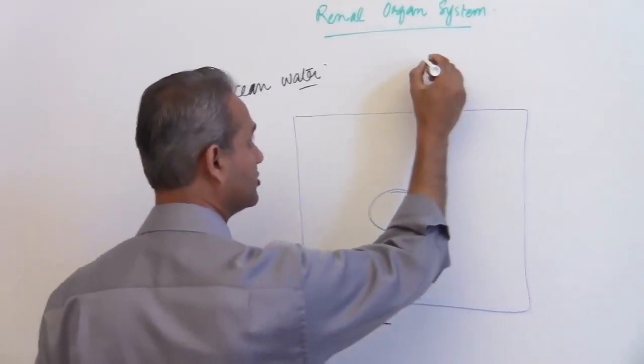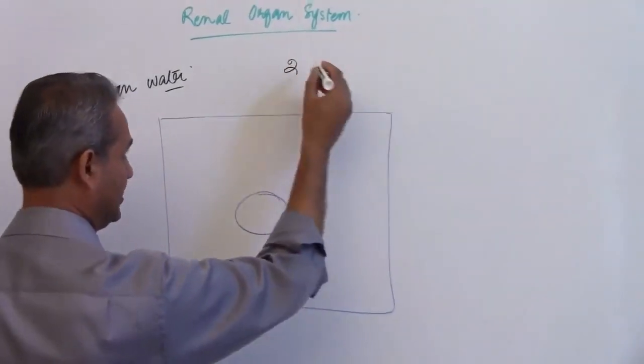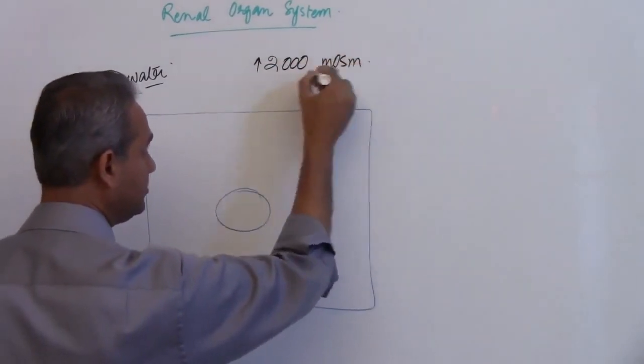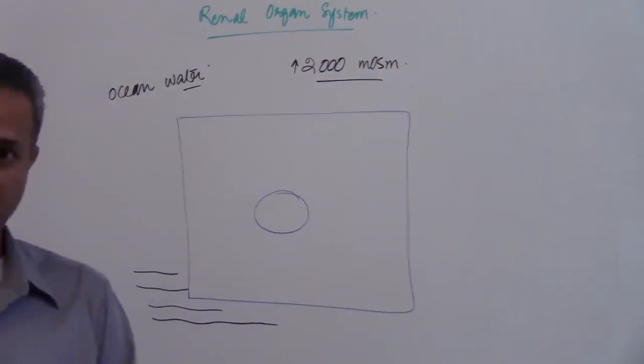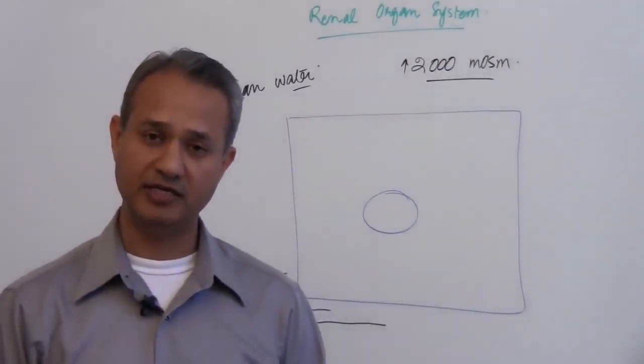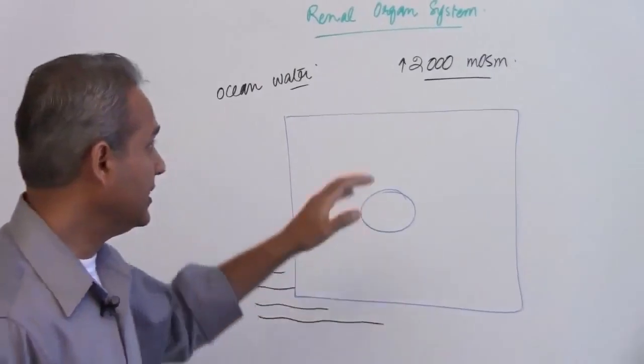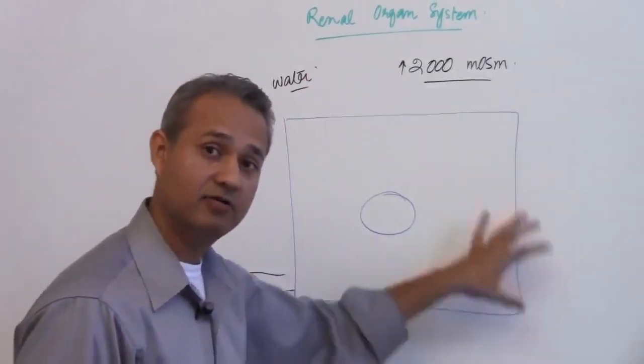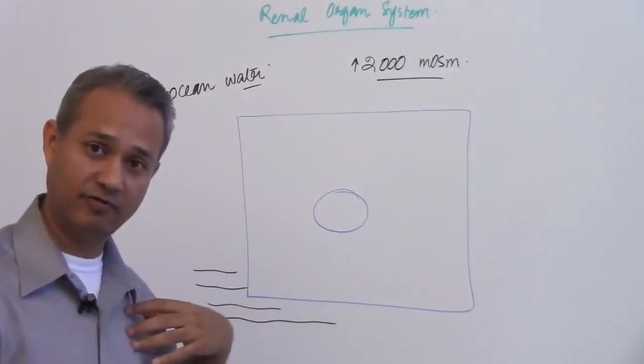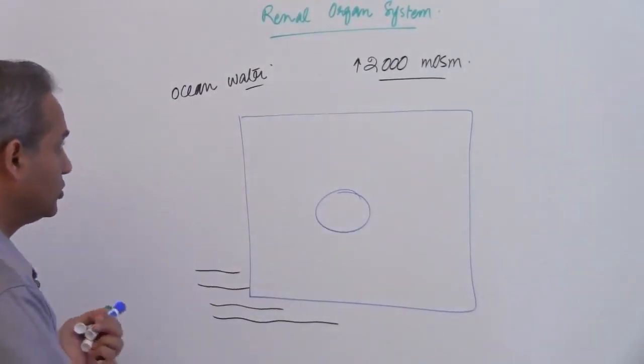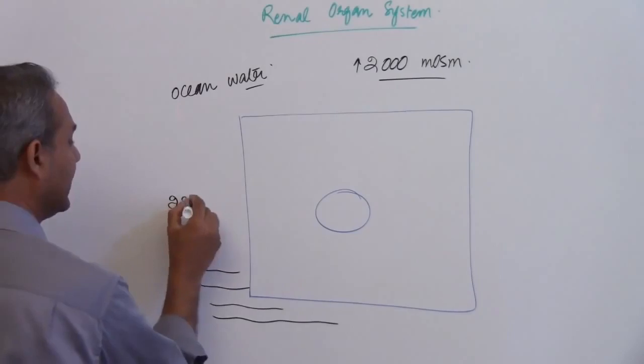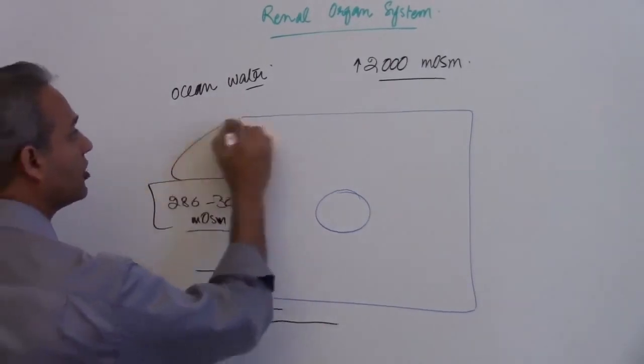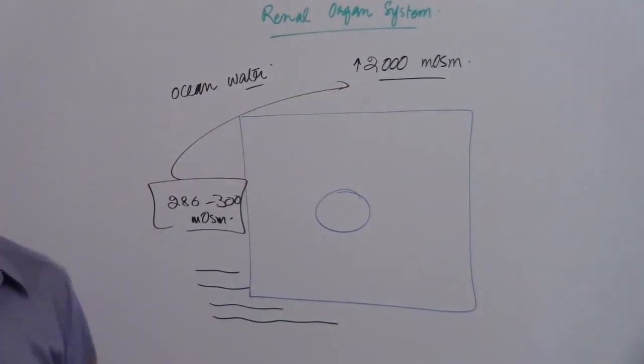Understand this: the ocean water's osmolality or osmolarity is normally more than 2000 milliosmoles. Do not worry, we will talk about what milliosmoles are and what osmoles are and how to calculate the osmolarity. I just want to make an important point that ocean water's osmolarity is greater than 2000 milliosmoles. The osmolarity around the cell in our extracellular fluid is really about 290 milliosmoles, 286 to 300 something milliosmoles.